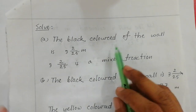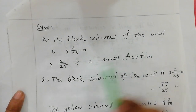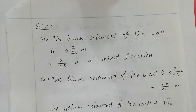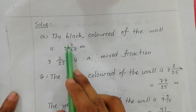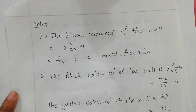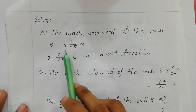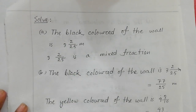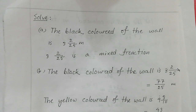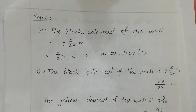The black color of the wall is 3 and 2/25 meters. A proper fraction is a simple number, so this is a mixed fraction. Therefore, the black color of the wall is a mixed fraction.